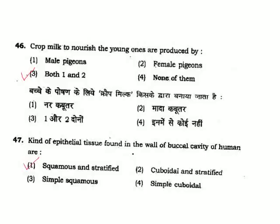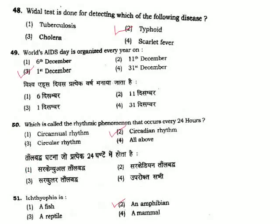Question 47: Kind of epithelial tissue found in the wall of the buccal cavity of humans — the buccal cavity lining cells are stratified squamous epithelium. Correct answer is Option 1. Question 48: Widal test is done for detecting which of the following diseases — Widal test is used for typhoid detection. Correct answer is Option 2.